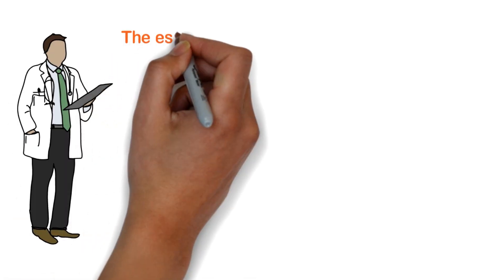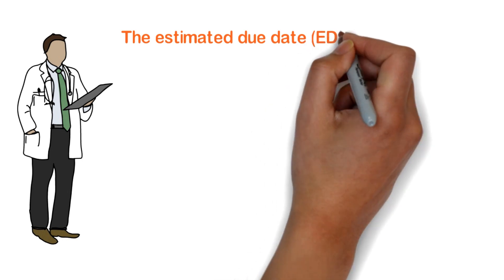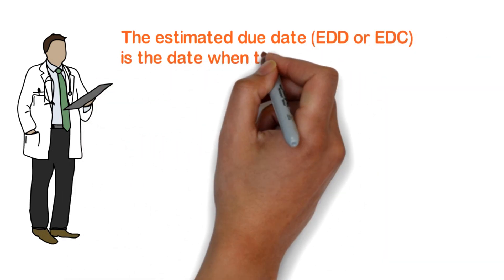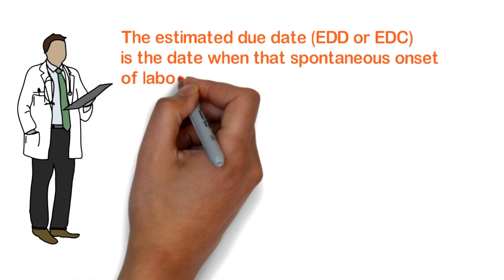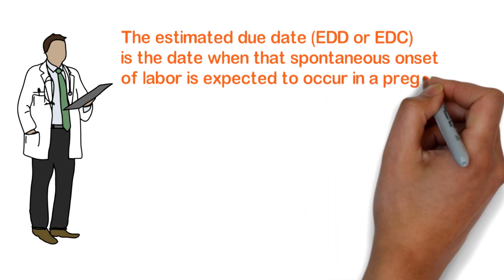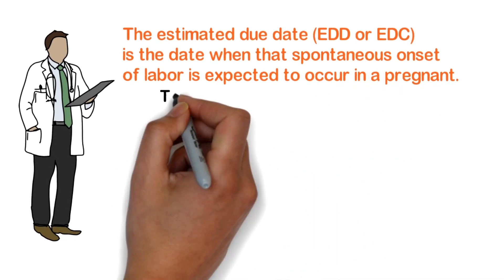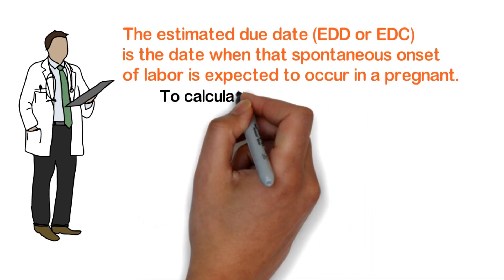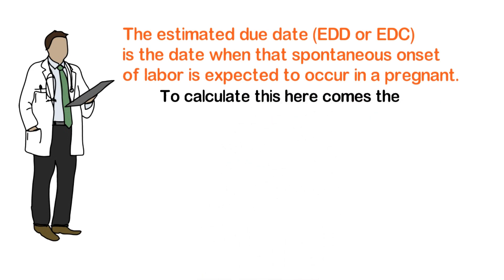The estimated due date is the date when the spontaneous onset of labor is expected to occur in a pregnant patient. To calculate this, here comes the Naegele's rule.